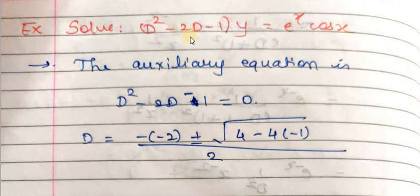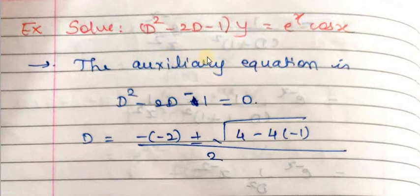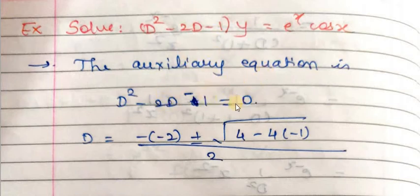Now we will see Example 2. We have to solve the differential equation (D² - 2D - 1)y = e raised to x·cos x. Again this is of the form f(D)y = x, so the solution is y = CF + PI, where CF is the complementary function and PI is the particular integral. To find CF, equate f(D) to zero: D² - 2D - 1 = 0.